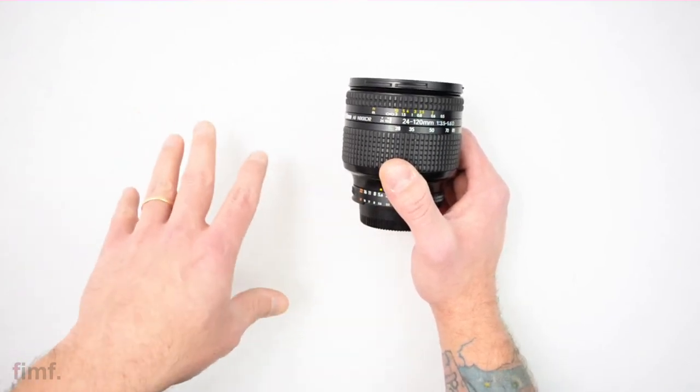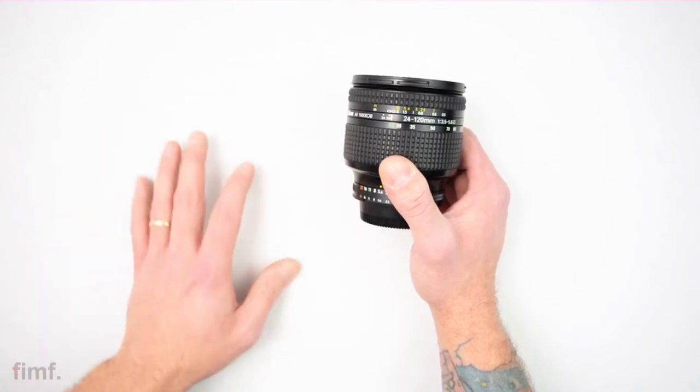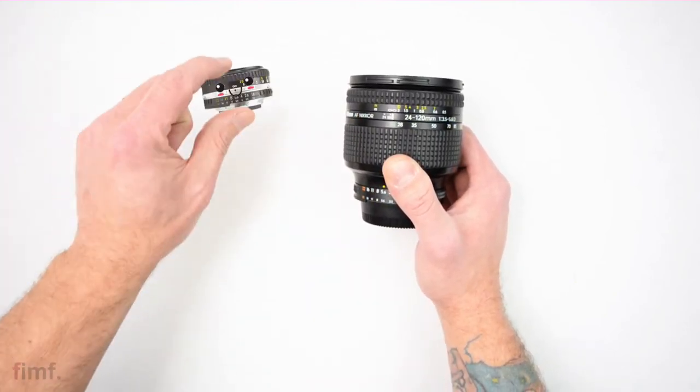This pretty much sits on my F3 which is with me every day. And then also I use the 50 millimeter Series E on there too because that thing is a cute little pancake.